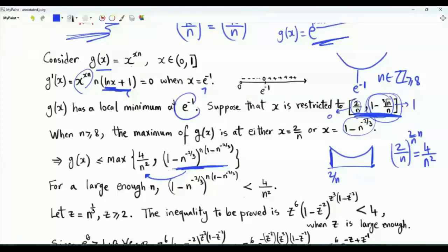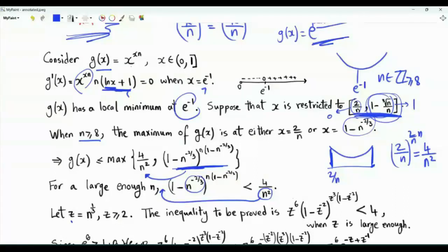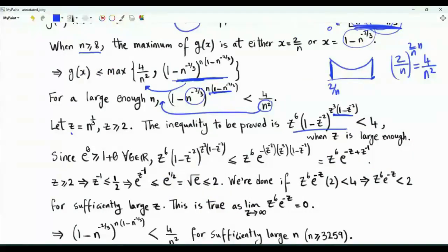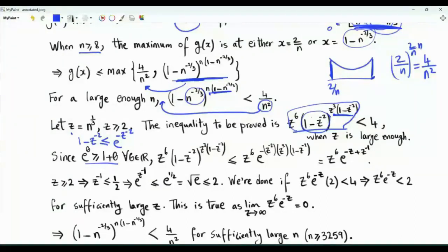To show this, define z = n^(1/3), the cube root of n, so z ≥ 2 when n ≥ 8. Moving n² to one side and replacing n^(1/3) by z throughout, n² becomes z^6, and n^(-2/3) becomes z^(-2). We want to show that for large enough z, the left-hand side is less than 4. We use the inequality e^θ ≥ 1 + θ for all real θ, so 1 - z^(-2) ≤ e^(-z^(-2)).